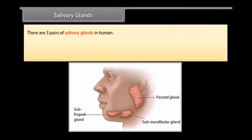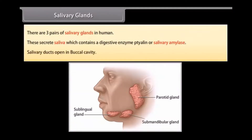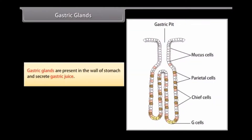There are 3 pairs of salivary glands in humans. They secrete saliva which contains the digestive enzyme ptyalin, or salivary amylase. Salivary ducts open into the buccal cavity. Gastric glands are present in the wall of the stomach and secrete gastric juices.